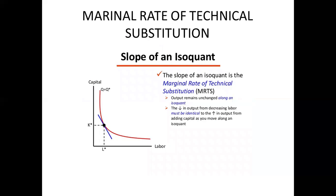Before proceeding, we need to understand one more concept: the marginal rate of technical substitution, or MRTS. Basically, MRTS is the slope of an isoquant. Output remains unchanged along an isoquant. The decline in output from decreasing labor must be identical to the increase in output from adding capital as you move along an isoquant. Simply put, to increase the units of one factor, the other factor must be decreased. For example, if the number of laborers is increased, the units of capital will be decreased, and vice versa.